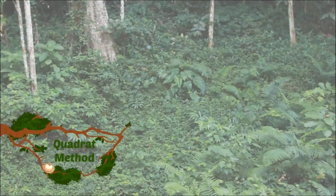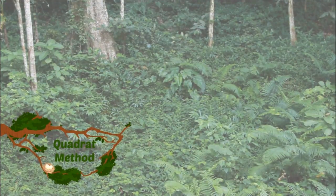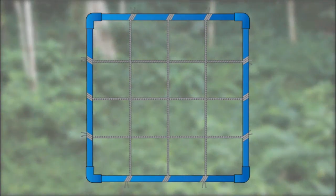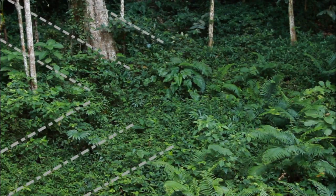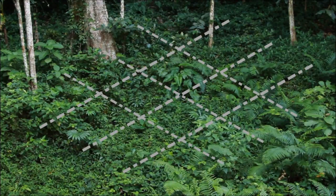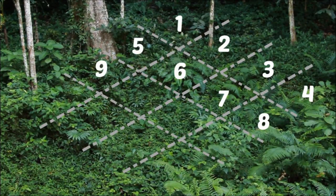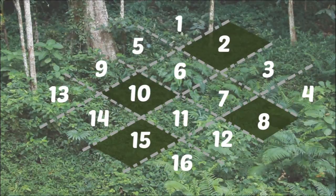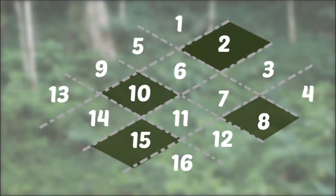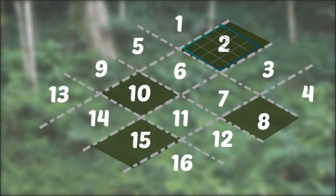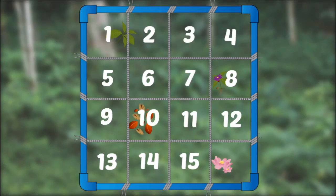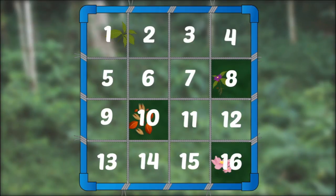The first is referred to as the Quadrat method because it uses a Quadrat. The Quadrat is essentially a grid of string inside a frame. In the Quadrat method, the collection site is divided into sections. Each square is assigned a number and areas are picked randomly by drawing lots. Select the area and place the Quadrat on top, then using the Quadrat's grid, again randomly select areas.